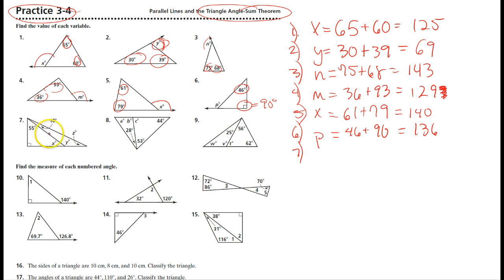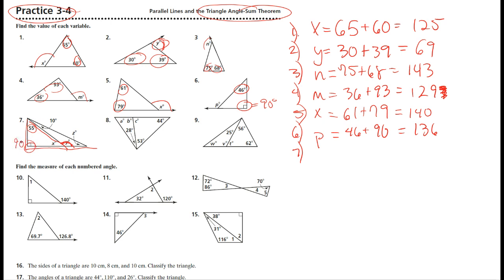Now, what about these? Y is an exterior angle on this smaller triangle, so I could say y equals fifty-five plus ninety, which is one hundred and forty-five.